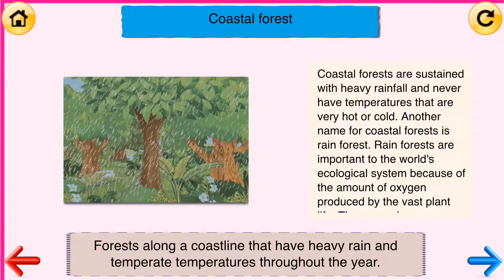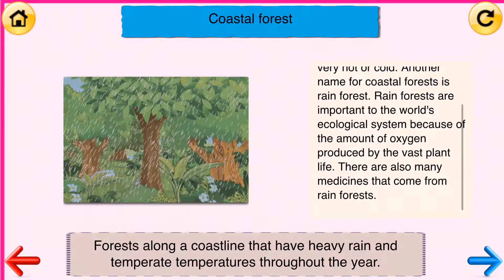Coastal Forest: Forests along a coastline that have heavy rain and temperate temperatures throughout the year. Coastal forests are sustained with heavy rainfall and never have temperatures that are very hot or cold. Another name for coastal forest is rainforest. Rainforests are important to the world's ecological system because of the amount of oxygen produced by the vast plant life. There are also many medicines that come from rainforests.